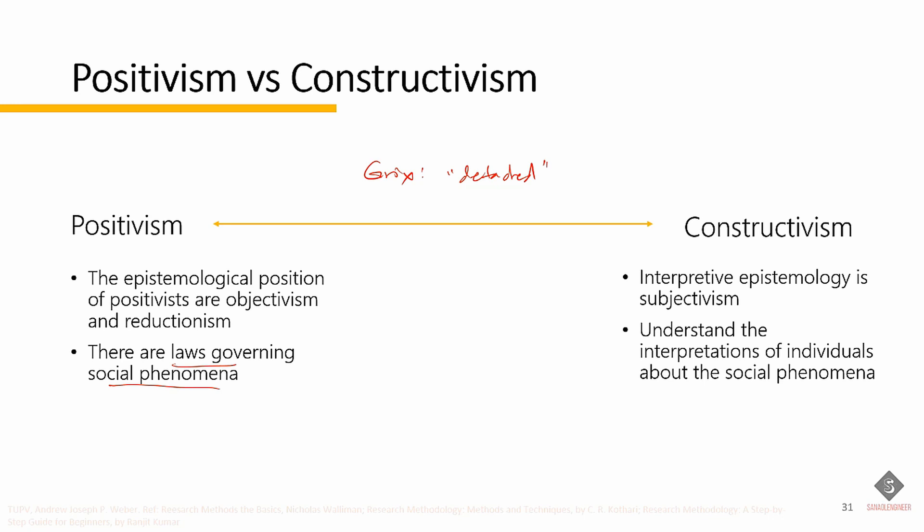If one believes in multiple socially constructed realities, it follows that these realities are approached from different angles by different people. The researcher encounters a world that is already interpreted, and their job is to reveal this according to the meanings created by humans rather than to discover universal laws. Therefore, there can be more than one perspective and interpretation of a given phenomenon.